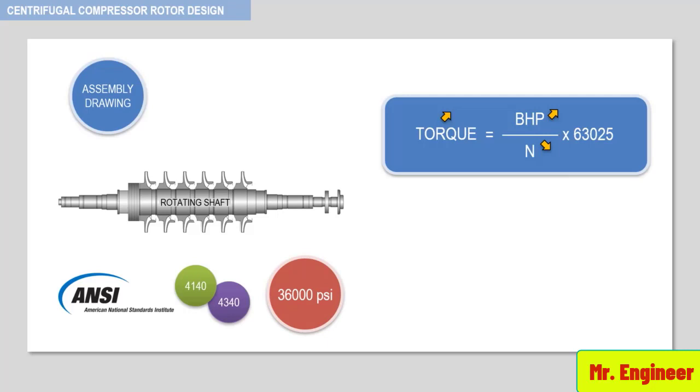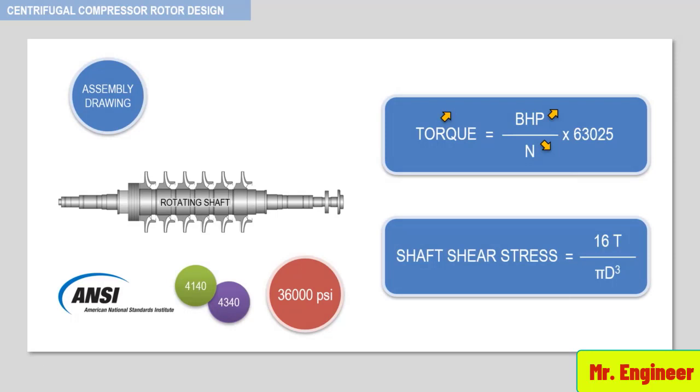The relationship for shaft shear stress is seen here, where T is the shaft torque and D the shaft end diameter. From this relationship, the designer will determine the shaft end diameter. Also note that the shaft diameter at any point along the shaft can be found from this equation if the torque at that point is known.